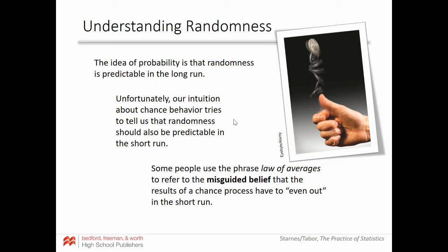Some people use the phrase 'law of averages' to refer to the misguided belief that results of a chance process have to even out in the short term. They don't. If I flip a coin five times, there's a chance I get all five heads. But if I do this a hundred times, I'll start falling toward that true probability. In the short term, anything can happen; in the long term, probabilities fall to what they should be.